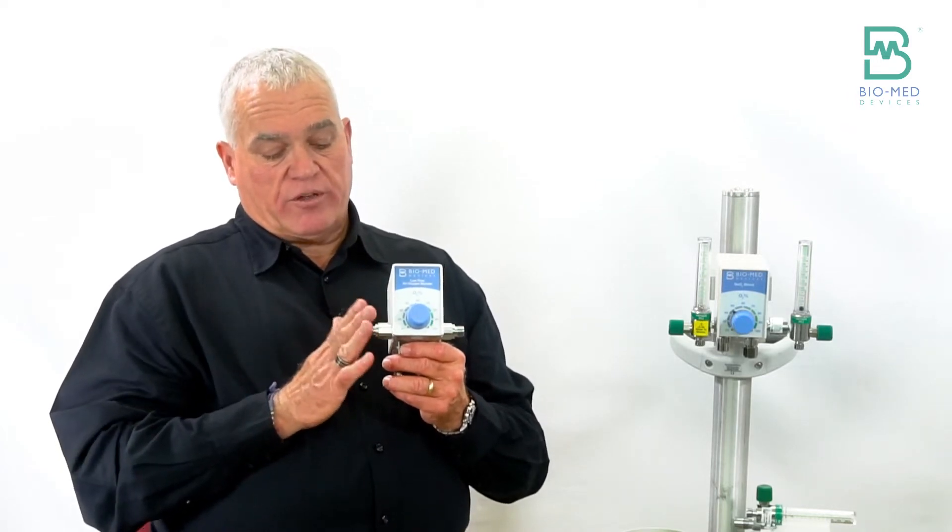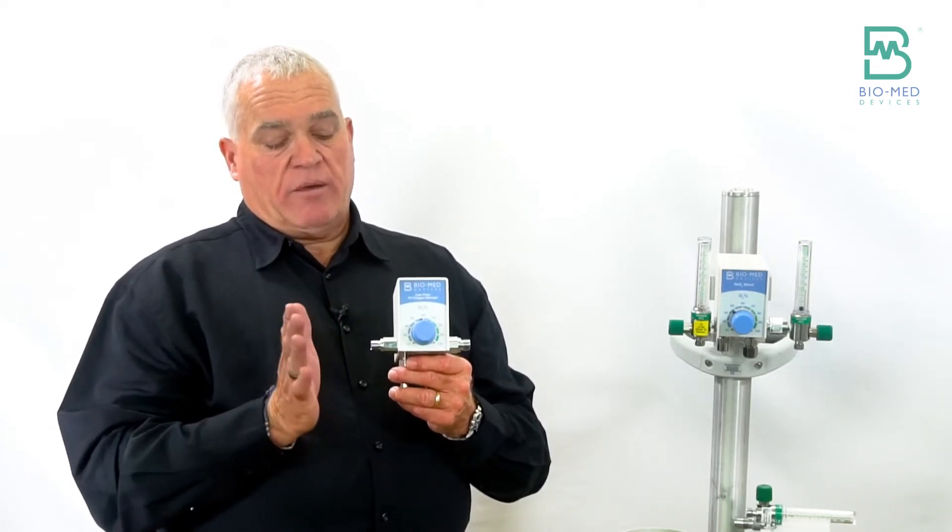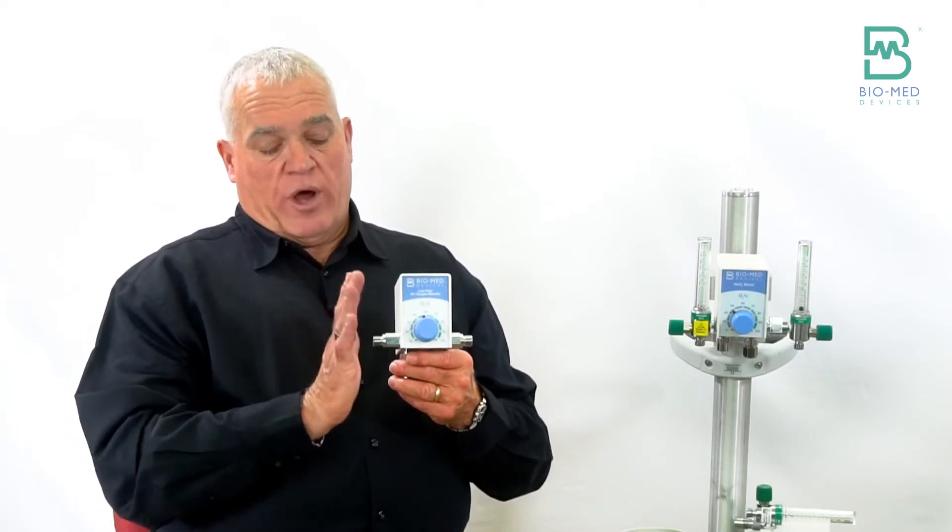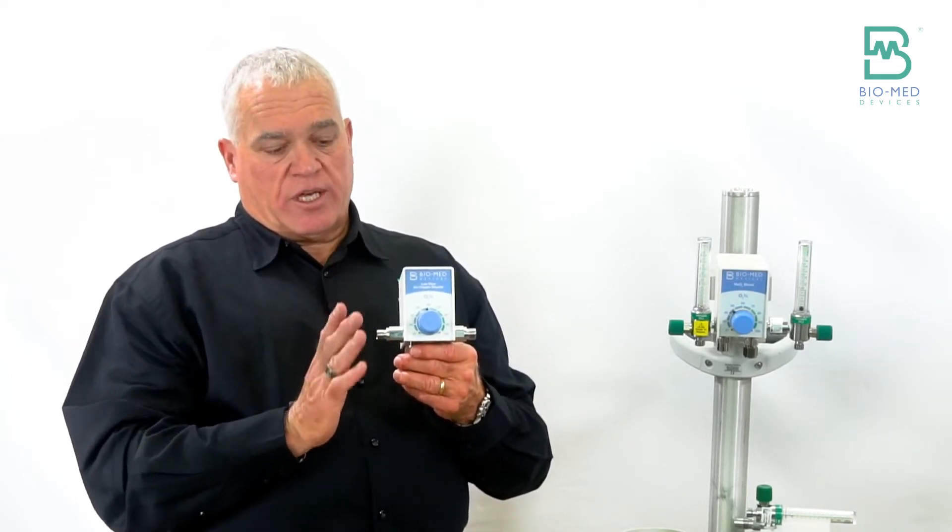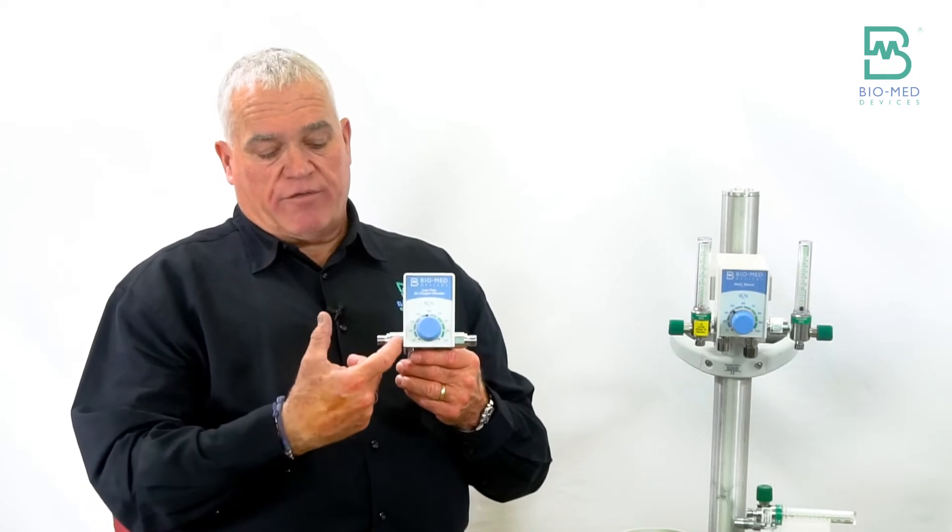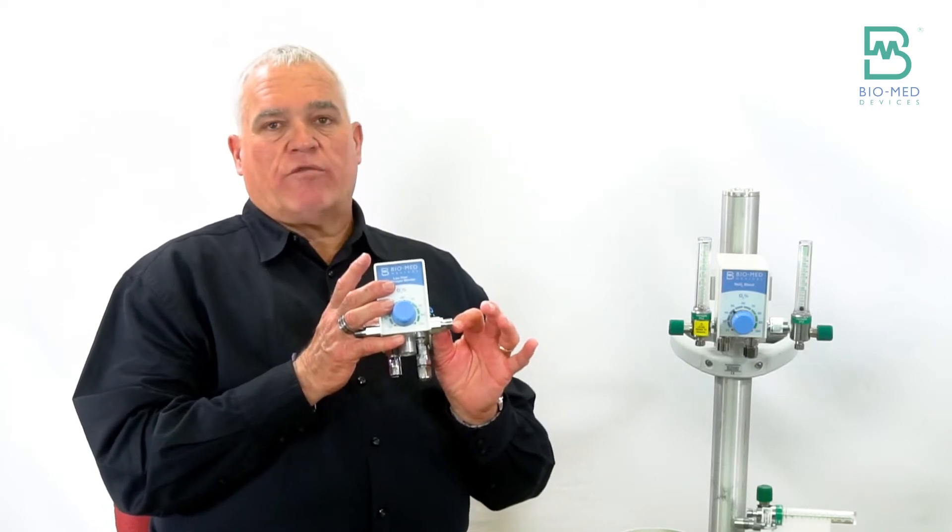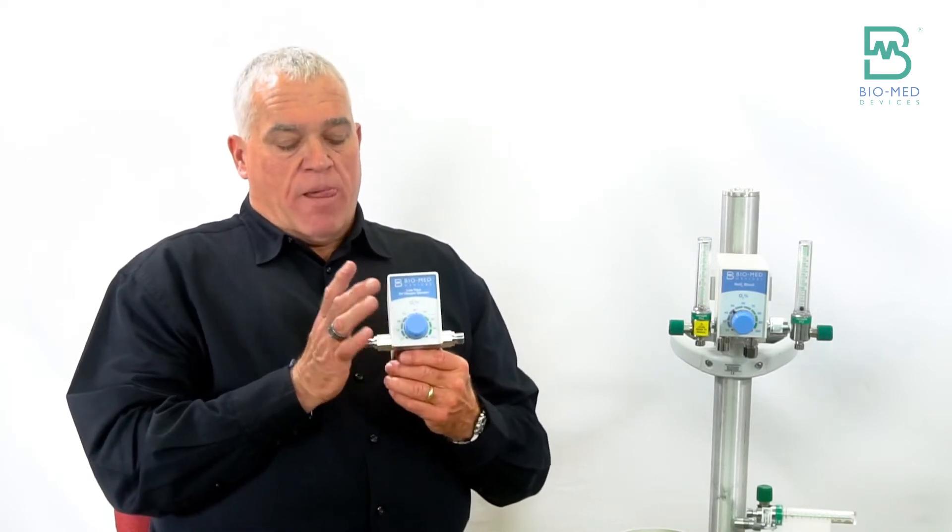It has a port on either side. Of course, this blender you can't really use until you add your flow meters. So typically people will put a flow meter on either side. One you'll usually connect to resuscitation bags, so you might have a zero to fifteen liter flow meter on this side and say a low flow on this side to do a low flow nasal cannula. The problem is when you put these flow meters on, you're kind of hanging out to the side just because you have to screw them on.